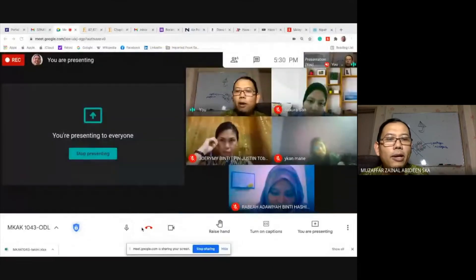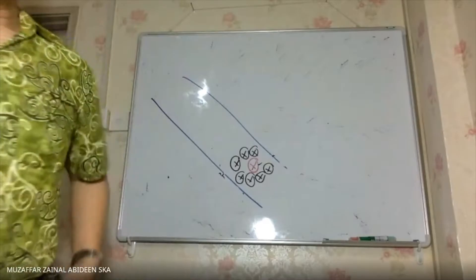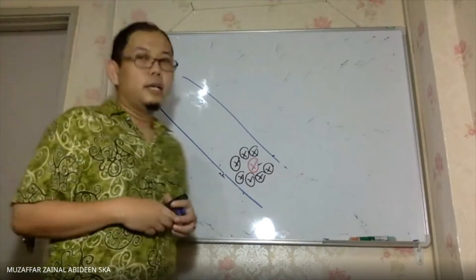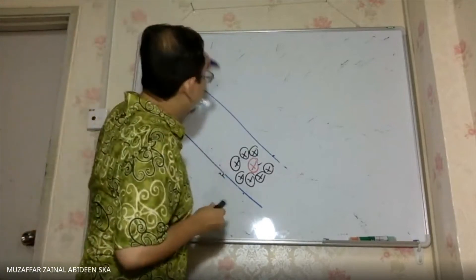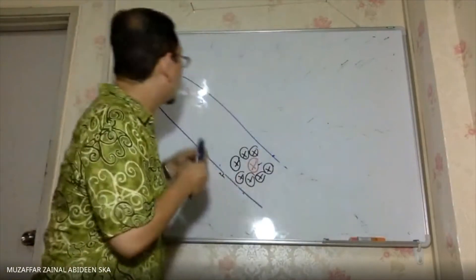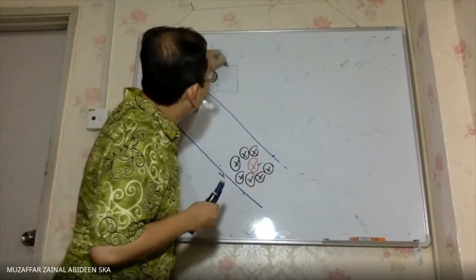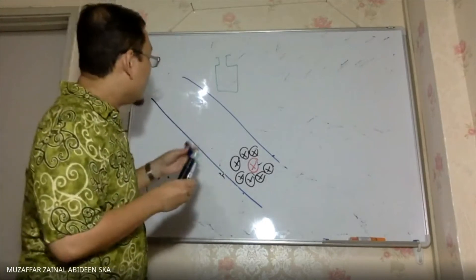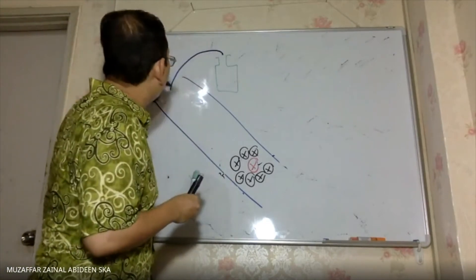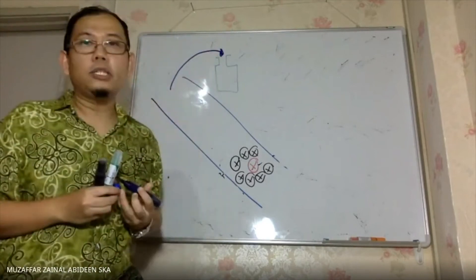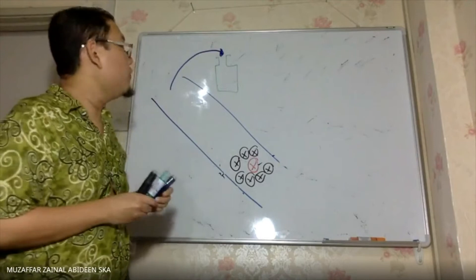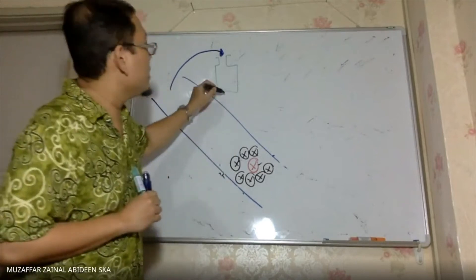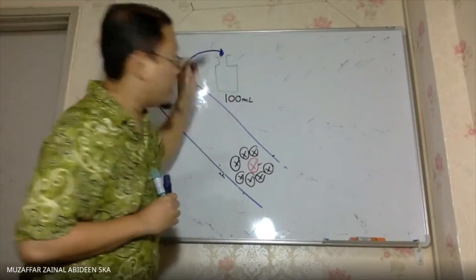Now moving to the whiteboard to explain how to conduct the membrane filtration method. The first step is to get a bottle and collect a water sample from a river. Put the water into the bottle and you must know the volume of water collected — for example, 100 mL.